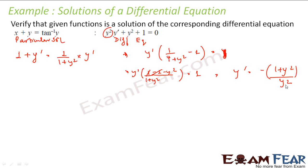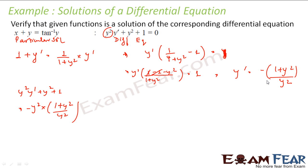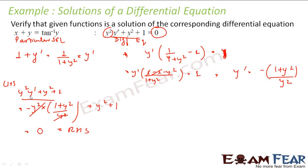This is a negative sign here — that is my y dash. So let us put everything into the equation. My LHS is y²·y dash + y² + 1. That is y² × [−(1 + y²) / y²] + y² + 1. The y² cancels, so this becomes −(1 + y²) + y² + 1 = −1 − y² + y² + 1 = 0. And 0 is equal to my RHS, thus my solution is true for this differential equation.